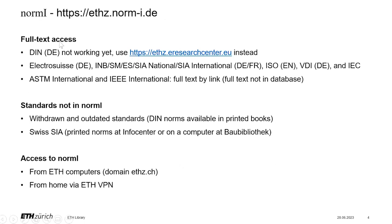We offer licenses for full-text access for several standards at the ETH Library: DIN standards, Electro Swiss, SIA, ISO, VDI, IEC, ASTM, and IEEE — they are all available in full text. You can download them if you are at ETH.